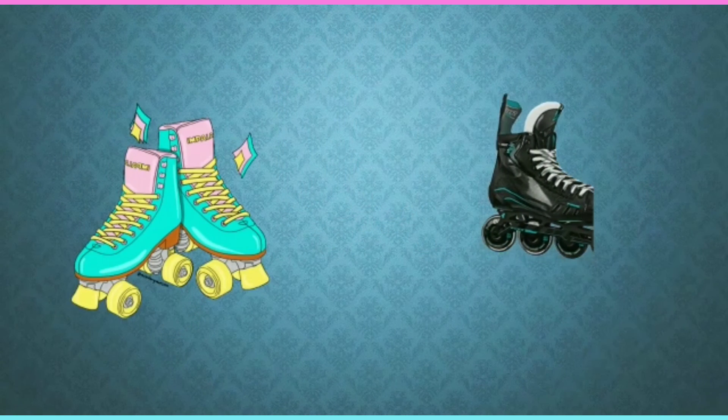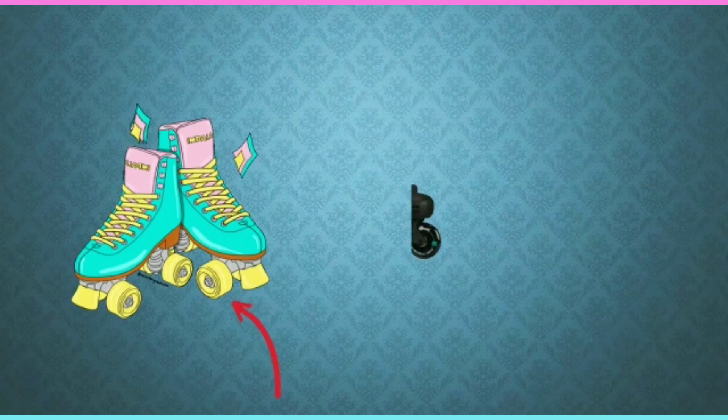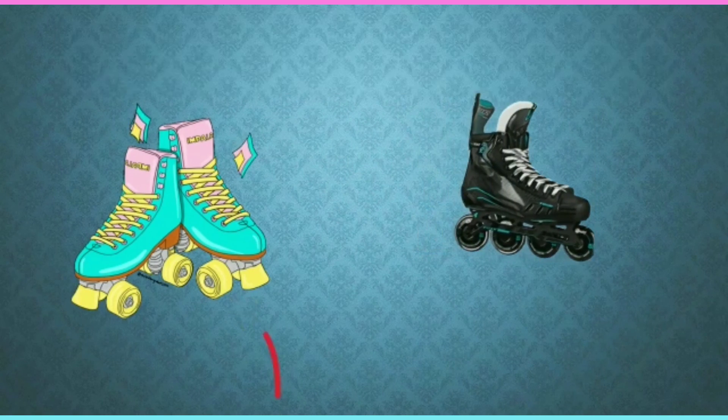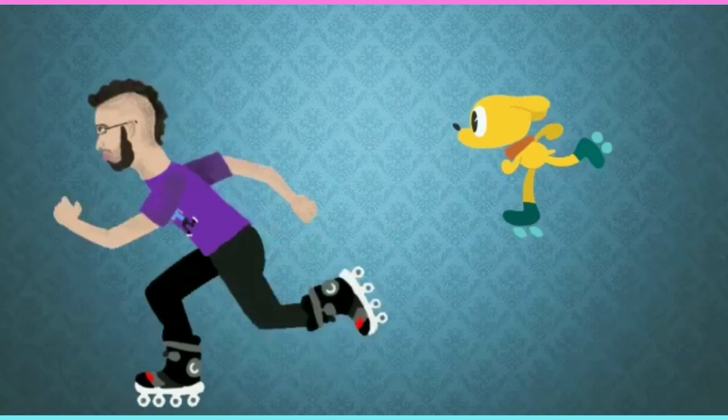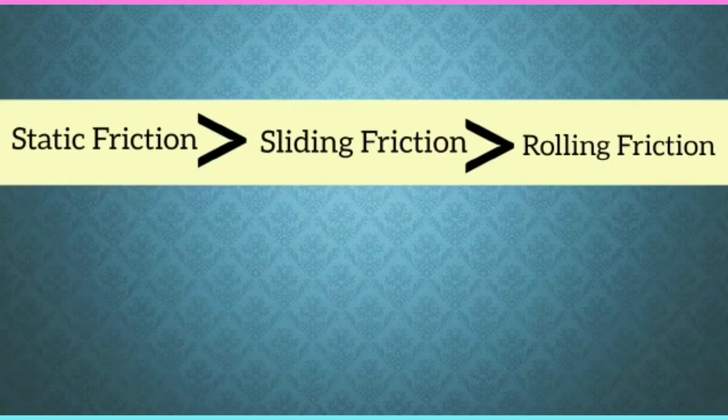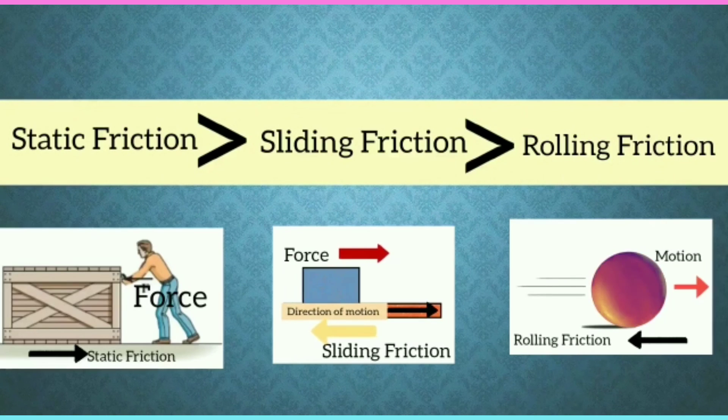See this roller skates. These are having small wheels which offer very small rolling friction and help skater to move fast. So, I hope you understood that static friction is the maximum and rolling friction is the minimum.